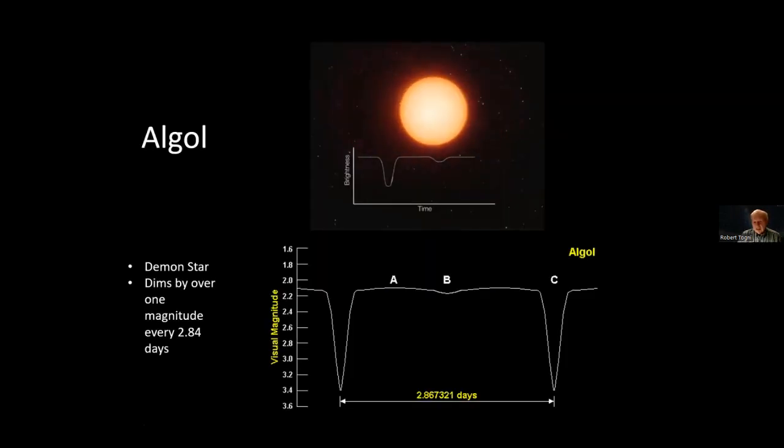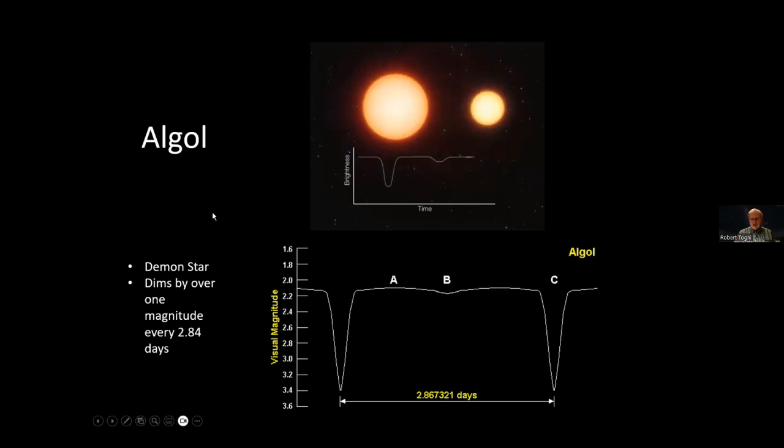Here's what Algol is, an eclipsing binary star. It's been known since ancient times, and that's why they call it the demon star. It's basically the eye of Medusa. It dims by over a magnitude every 2.84 days. So you can catch it fairly often, you can catch it in eclipse and dimmer than it normally is.